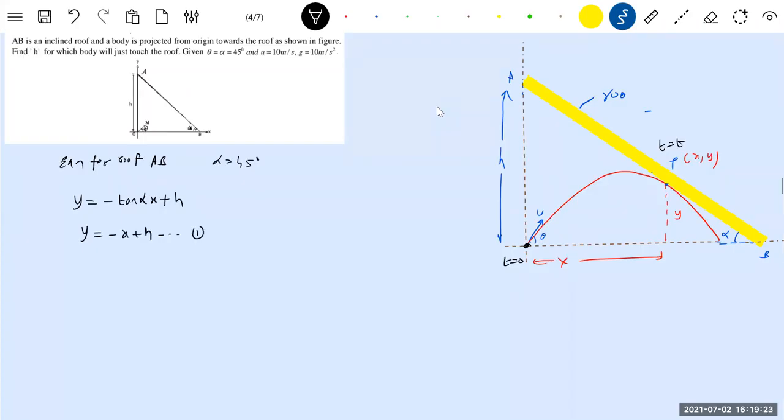Then the projectile which is projected from the origin should go and touch the roof at point P. So what is the equation? x tan θ. OK, I think check once. Y equal to x tan θ minus gx² over 2u² cos² θ. Y, x, θ - θ is 45 degrees, θ also 45 degrees, so this will be gx² over 2...